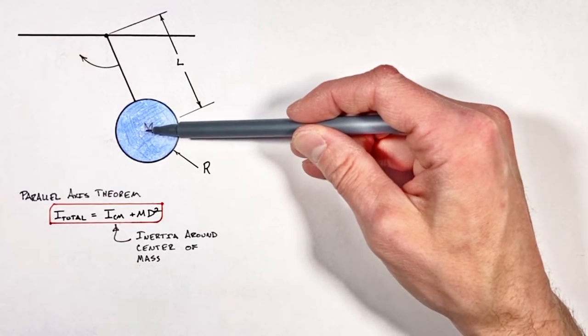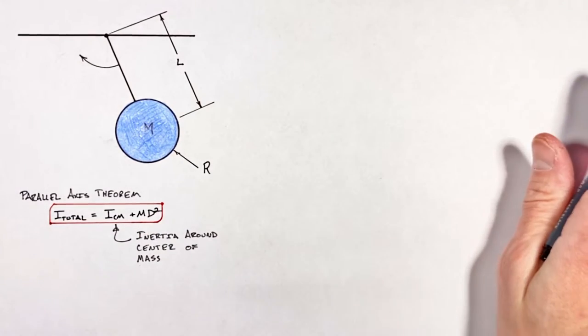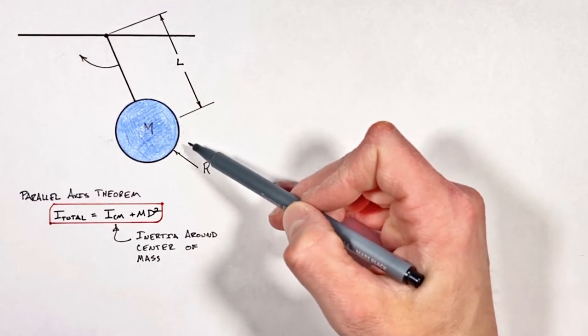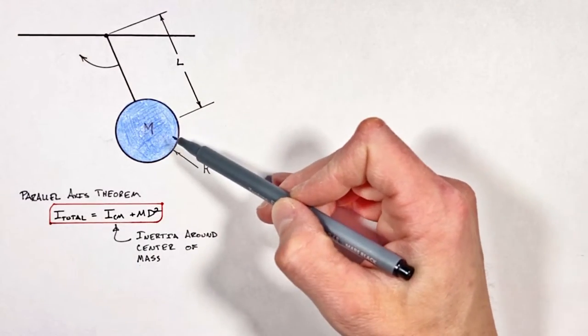Now if you want to see this entire equation derived, just click up here. Typically you're gonna have a situation where you have actual numbers given to you in a problem and you